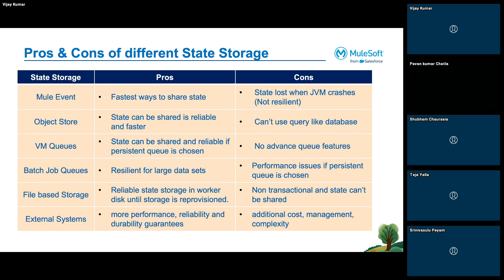File-based storage is reliable because data is written in the worker's file system. The only issue is it's written in the local disk — if we reprovision or restart the worker we lose all data. Also, if you want to share the file with another application or worker you cannot, since it's stored in worker memory. External systems — databases, SFTP servers, Redis, in-memory data grids, Anypoint MQ — offer better performance, reliability, and guarantees, but add additional cost, management overhead, and complexity to the solution.